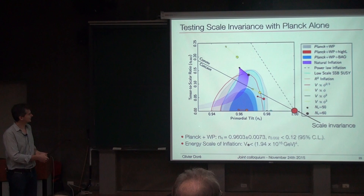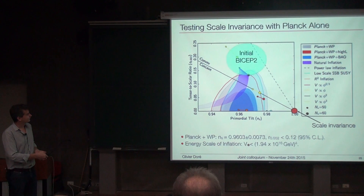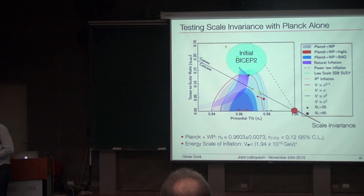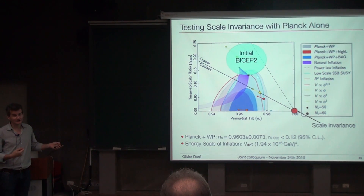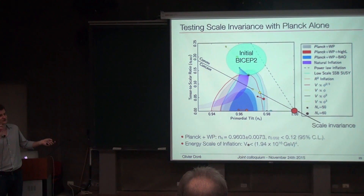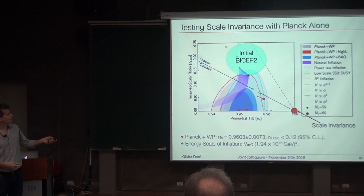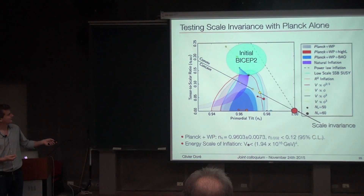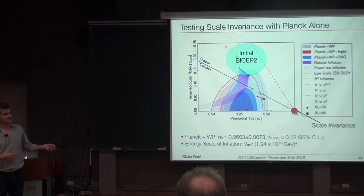R is currently consistent with zero — no detection. That's why there was such large excitement when the BICEP2 collaboration announced a detection of R ≈ 0.2, which would have placed it around here in this plane — slightly in tension with Planck, but a very exciting result, considered potentially the ultimate proof of inflation. There were problems related to foreground interpretation, but the impact showed how important B-mode measurements are for the community and for testing inflation.